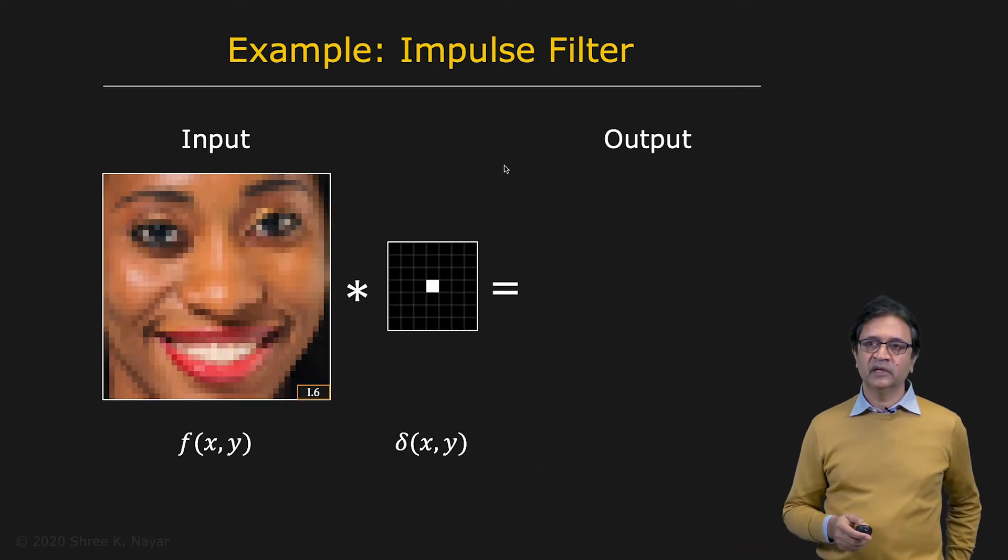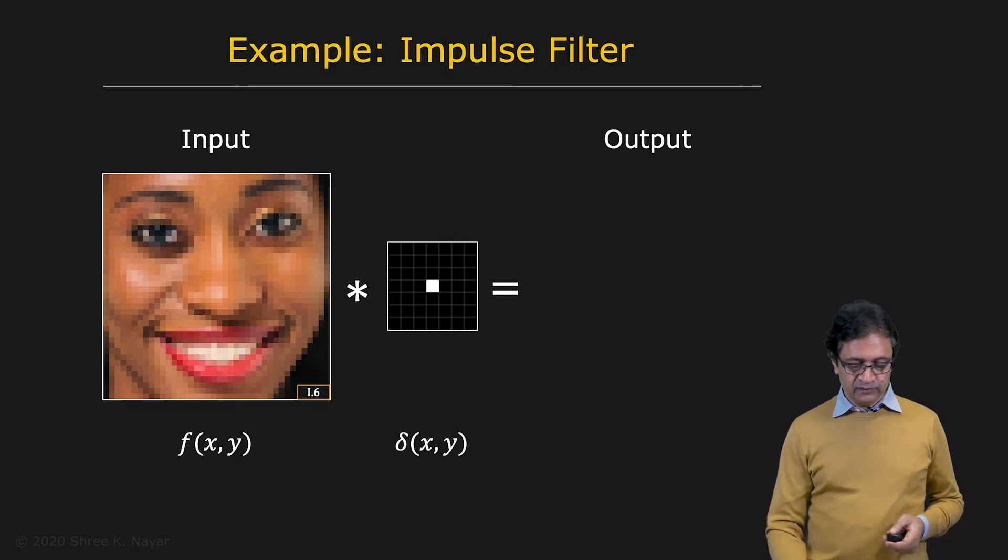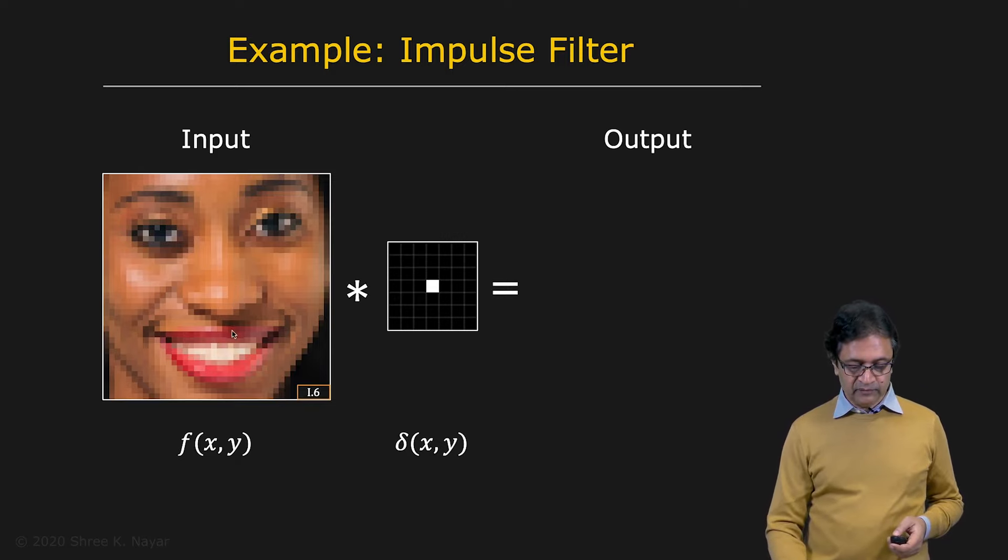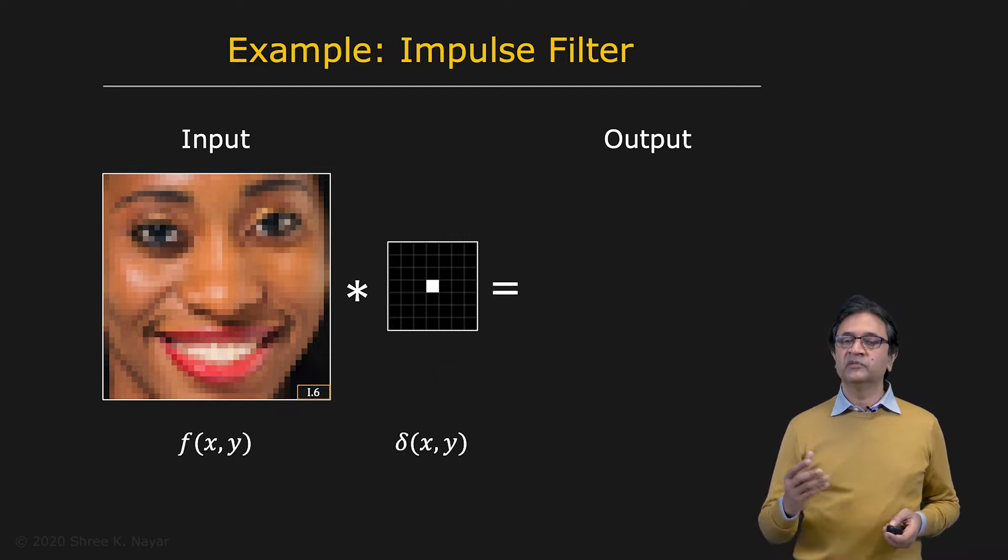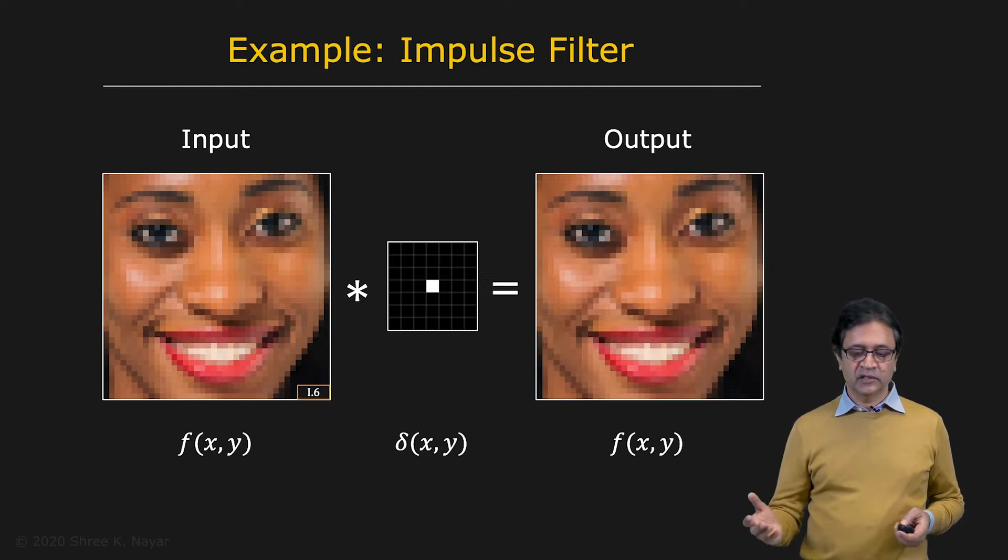Okay. Now let's take a look at some examples of convolution. So here's an input image, f of xy. You're going to convolve it with the impulse function, delta xy. And just take a moment and think about what the output is going to be. Remember, this is the impulse function. So it's an impulse filter. Well, if you flip it both ways, it's still going to be the same function. And you know from the sifting property of the impulse function that you're going to essentially get exactly the same image back. So the output is going to be equal to the input.